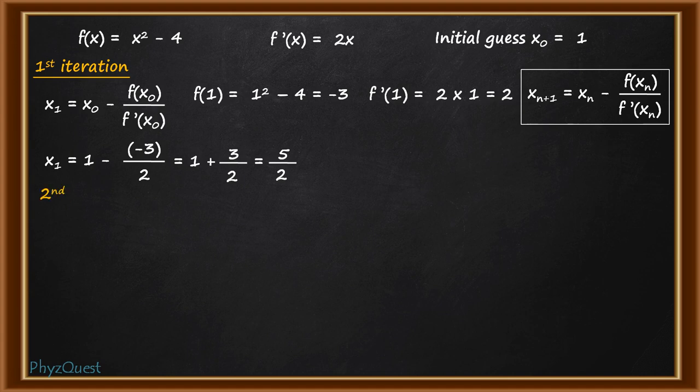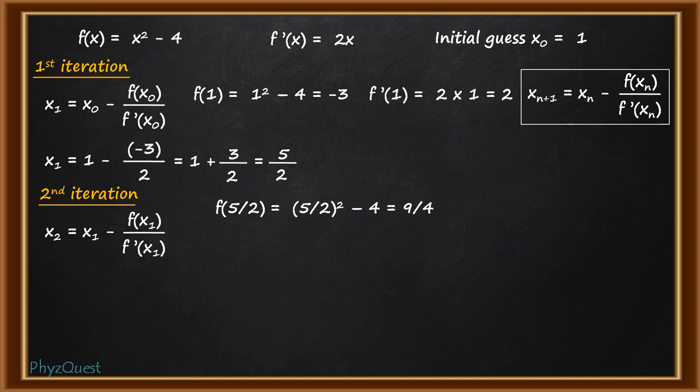The next second iteration is x2 = x1 - f(x1)/f'(x1). Again, x1 we have got 5/2. So f(5/2) = 9/4 and f'(5/2) = 5. Putting the values, x2 will be equal to 5/2 - (9/4)/5 which ultimately comes out as 41/20.